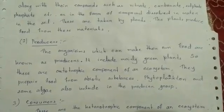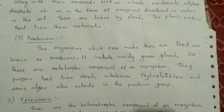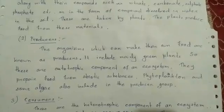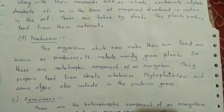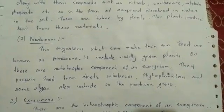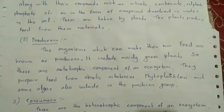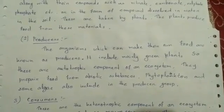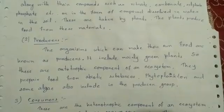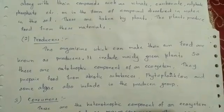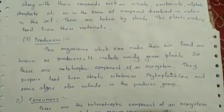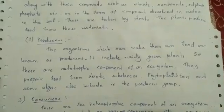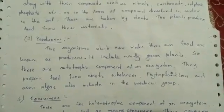The second component is producers. Organisms which can make their own food are known as producers. These are the autotrophic components of an ecosystem and include mainly green plants. They prepare food from abiotic substances. Phytoplankton and some algae also belong to the producer group.